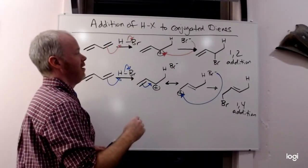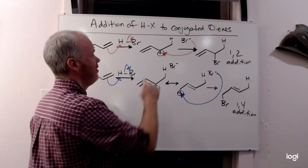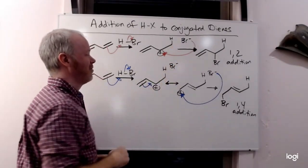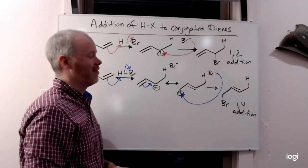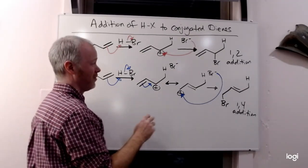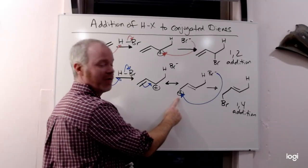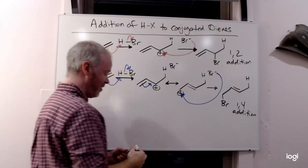So if we didn't want the positive charge on the primary carbon here because that was unstable, why do we want it over here? That's a good question. So two things. For one, this positive charge is primary, but it is also still stabilized by resonance.